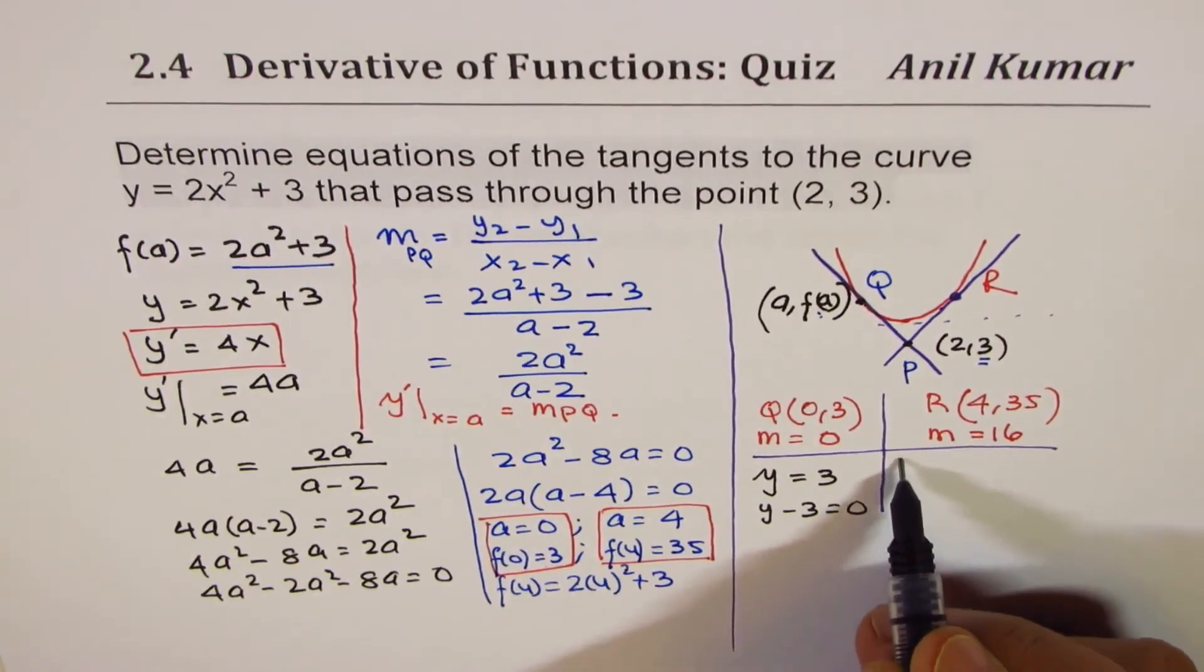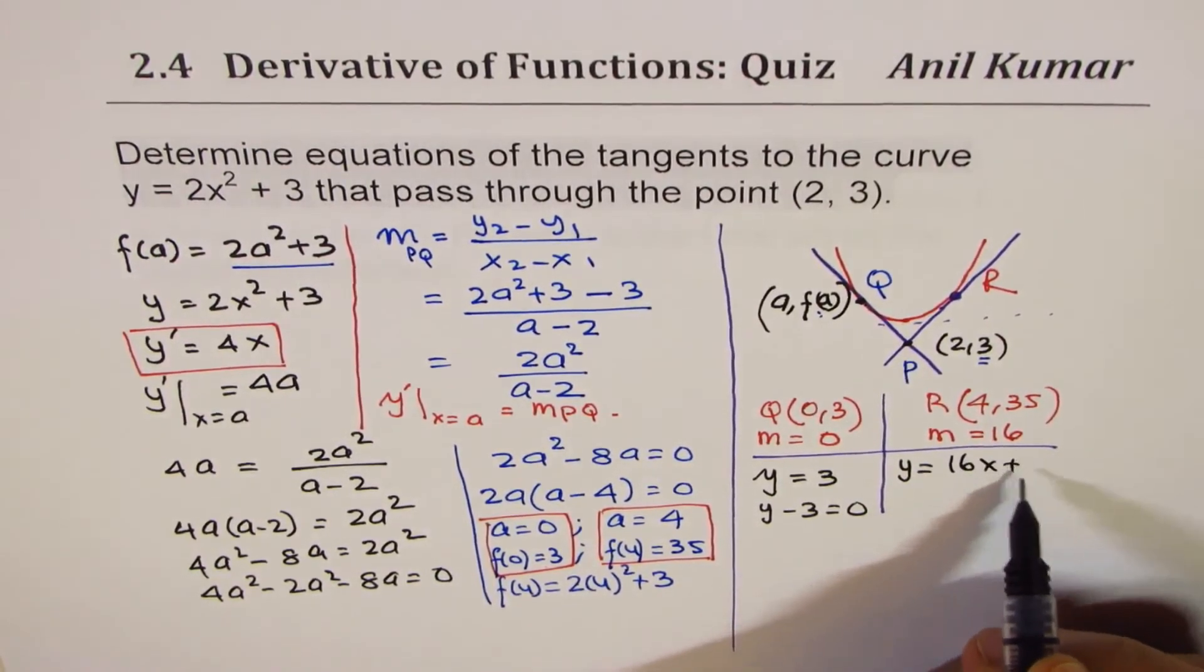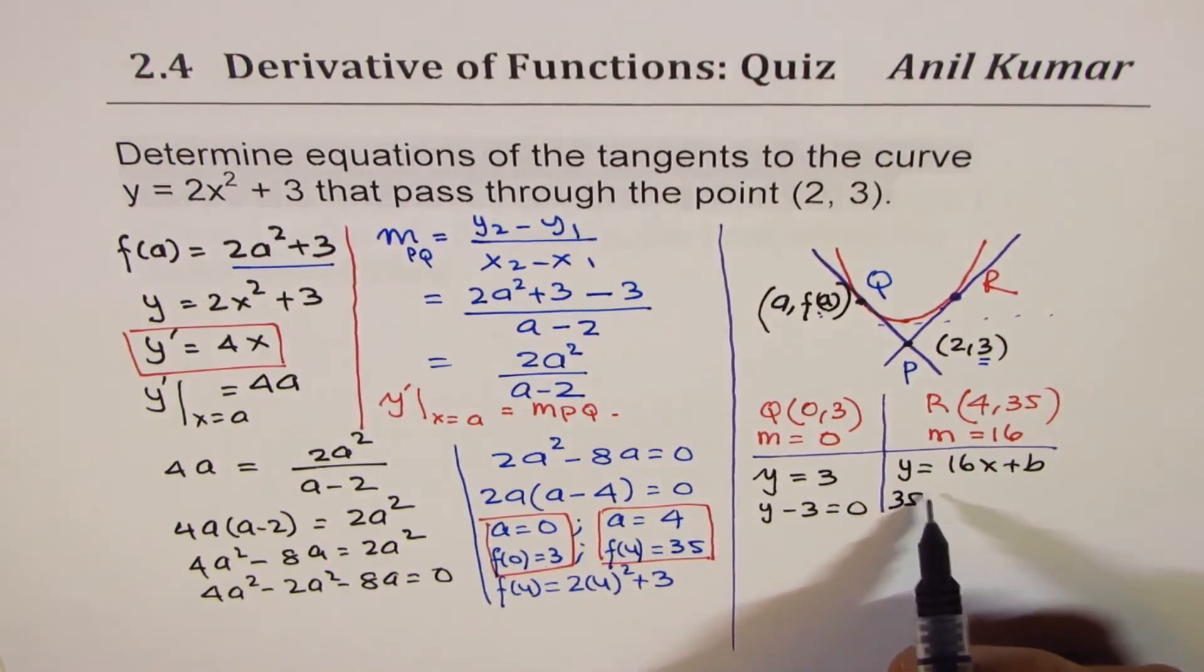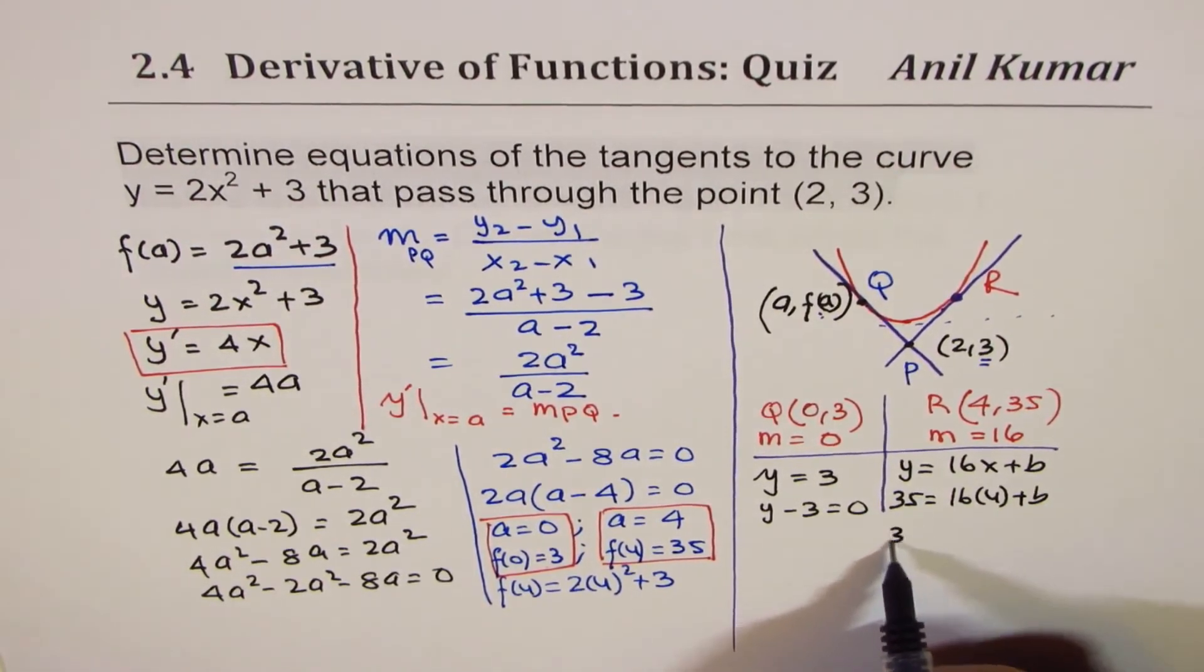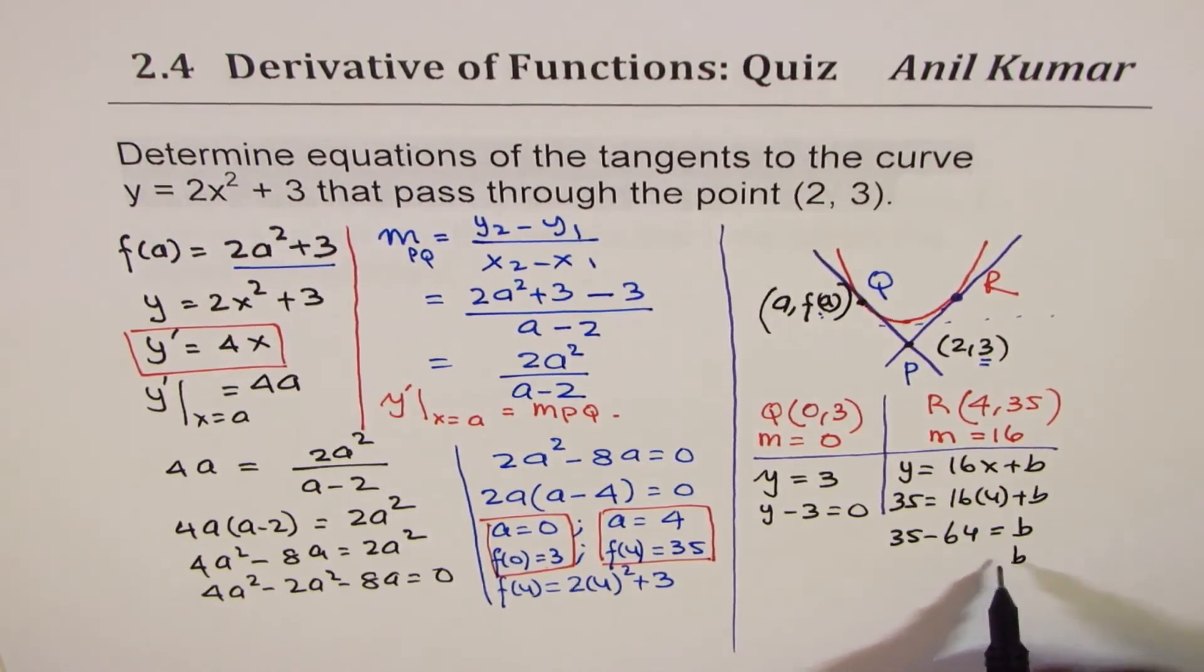In this case, we could write slope as 16. So y equals 16x plus b. To find the value of b, let me substitute 4 and 35. So 35 equals 16 times 4 plus b. Or we could do 35 minus 16 times 4. 4 times 16 is 64. So the value of b equals negative 29. Therefore, the second equation is y equals 16x minus 29.